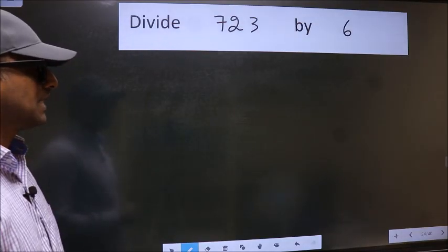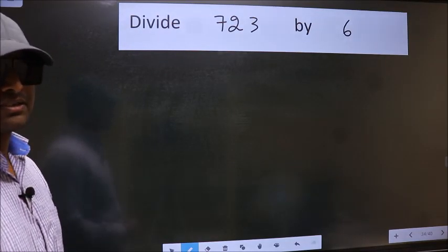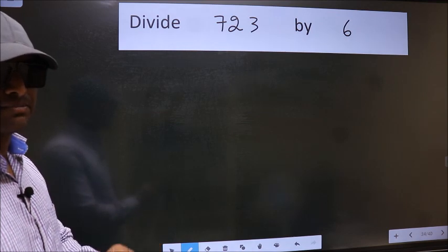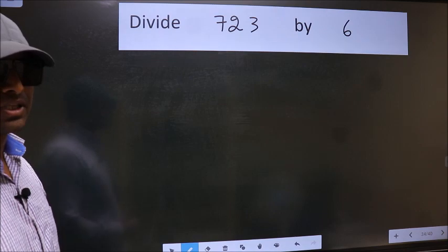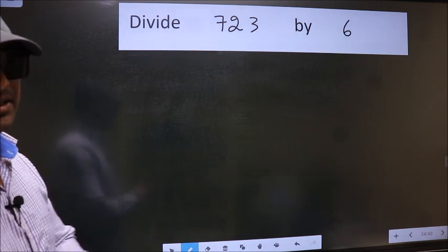Divide 723 by 6. While doing this division, many do this mistake. What is the mistake that they do? I will let you know. But before that, we should frame it in this way.